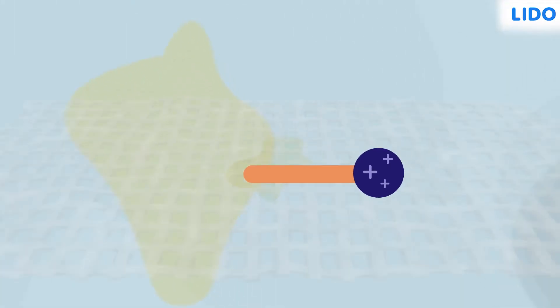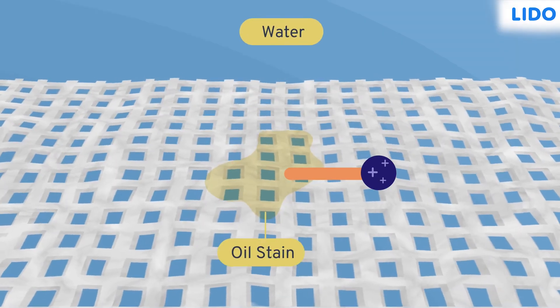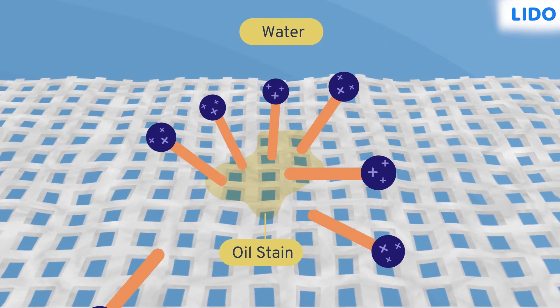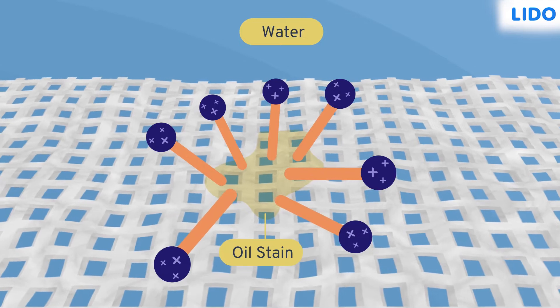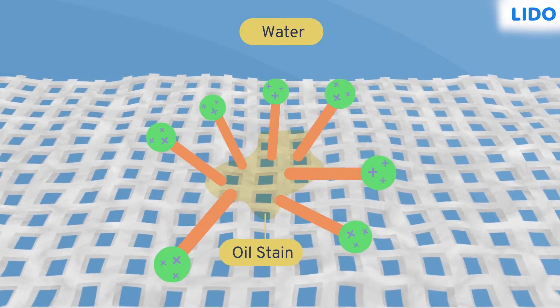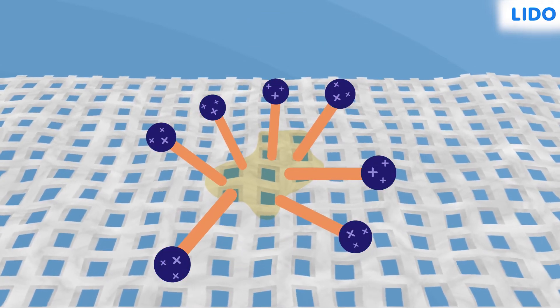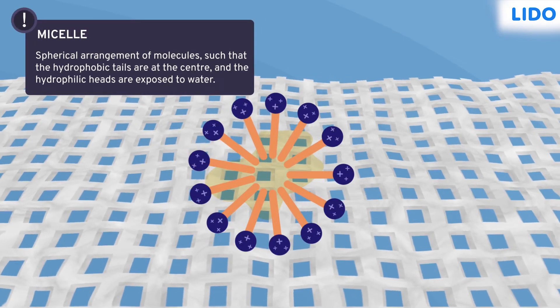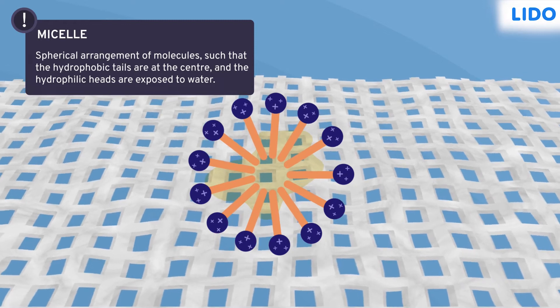When this detergent comes in contact with water and the oil stain, the hydrophobic tails of each molecule of detergent attach themselves to the oil stain and the hydrophilic head remains in contact with the water. The arrangement is such that only the hydrophilic heads of the detergent are visible and all the tails enclose and trap the stain.